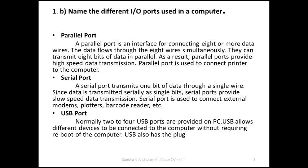Then serial port — rather than transmitting a bulk of bits or set of bits, it transmits bit by bit. In serial transmission, data travels on a serial cable. Serial port carries single bit transmission at a time, so the speed is comparatively lower. Then USB port — you can connect many different input devices and other devices to the computer using the USB port.